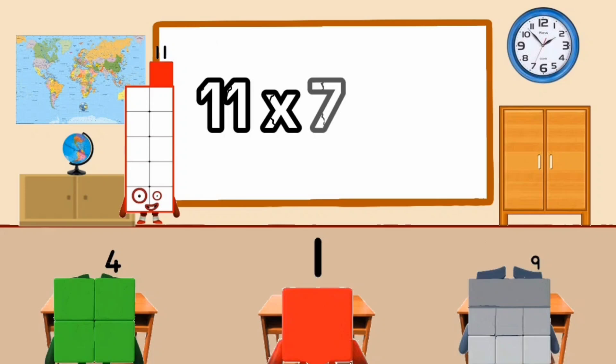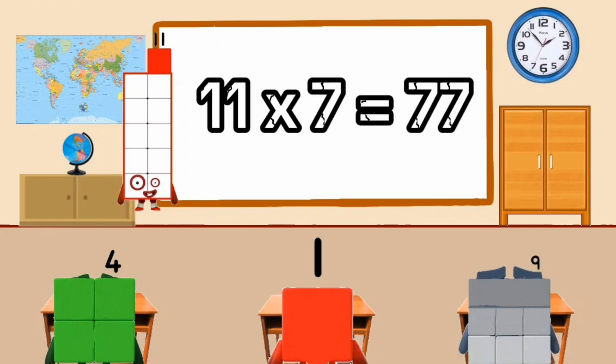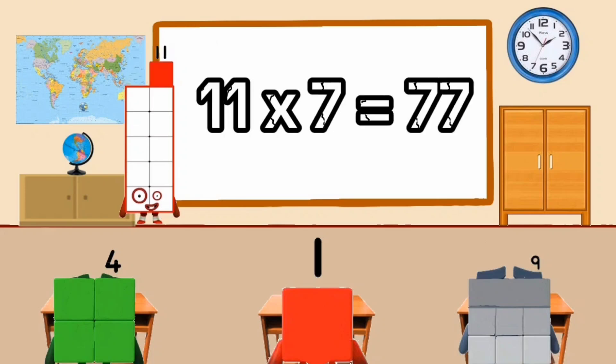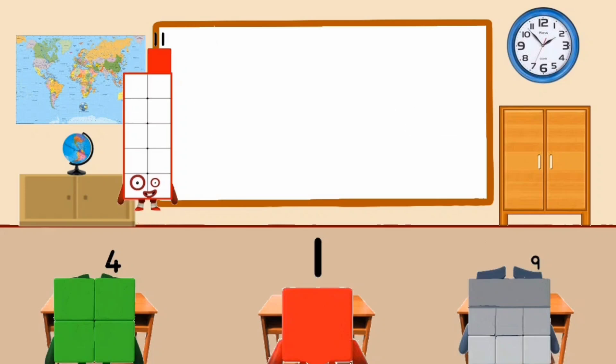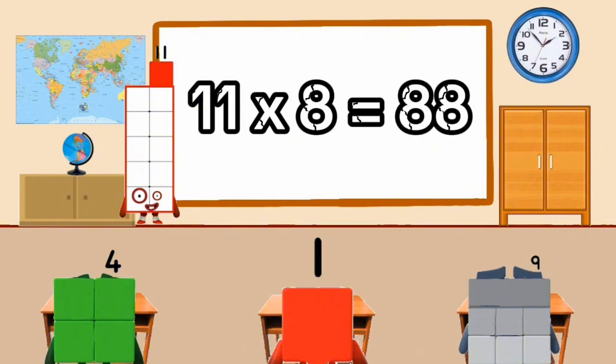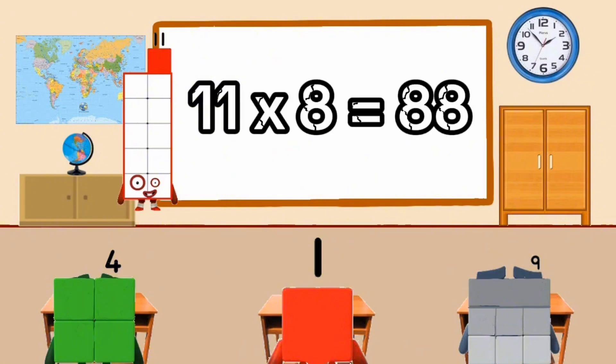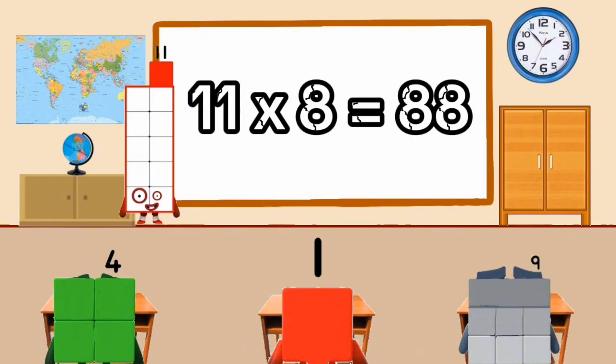11 times 7 equal 77. 11 times 8 equal 88.